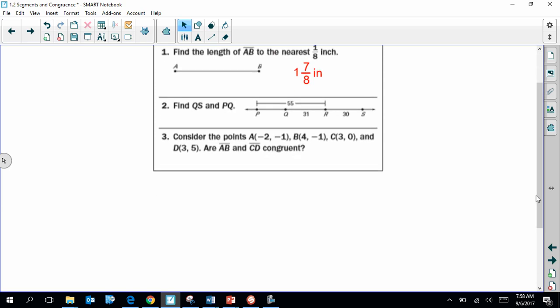Find the length of segment QS and PQ. So according to how we set it up earlier, QS is the sum of QR and RS. So substitute those values in, we get QS to be 61. PR is the sum of PQ and QR. Substitute the values that we know here and we see that PQ is 24 units long.